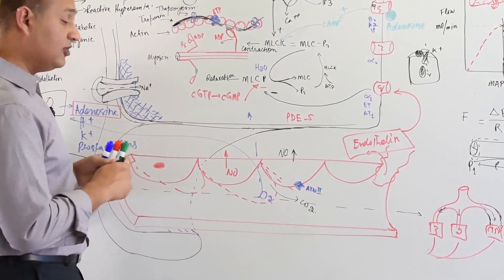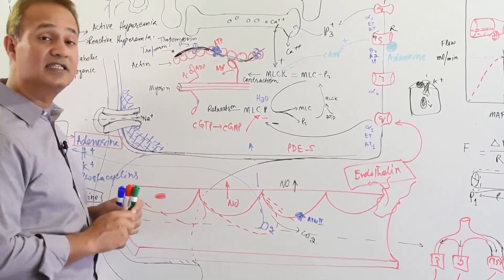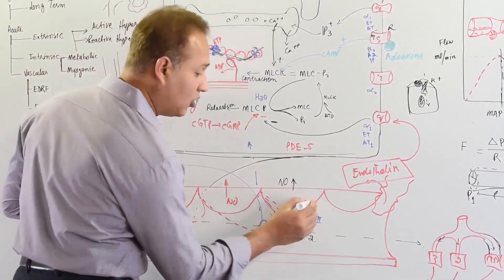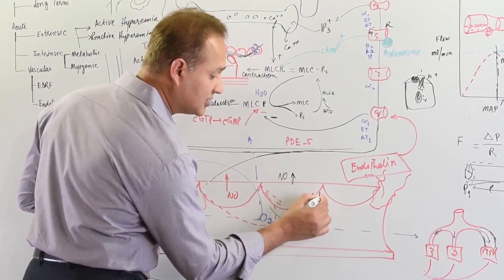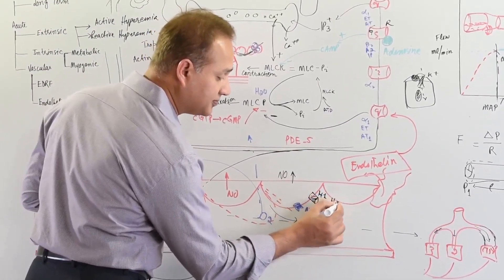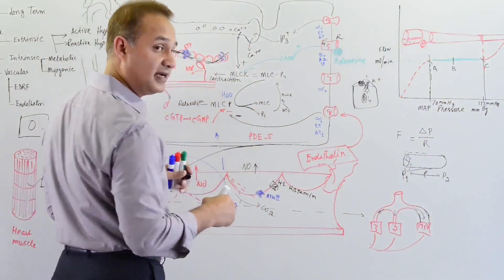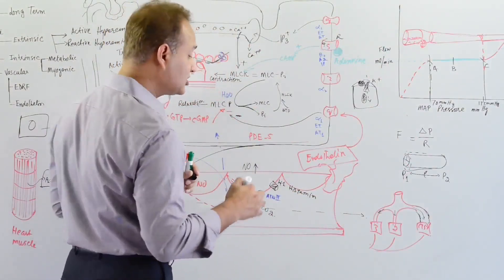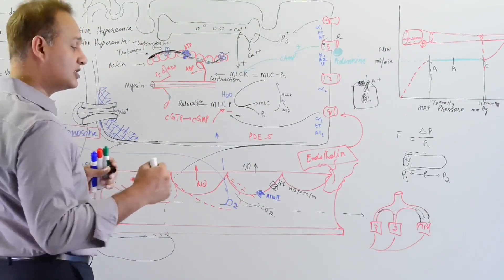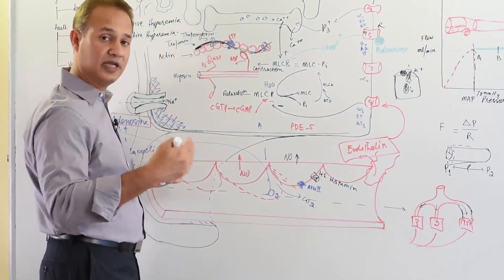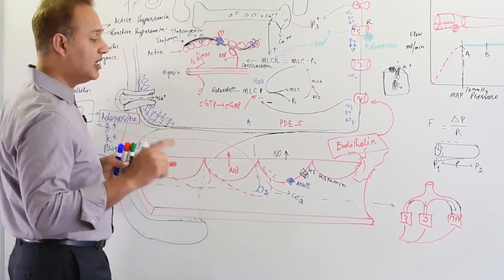Then vasoactive amines also cause nitric oxide to be released. Histamine H1 receptors also cause nitric oxide to be released. Prostacyclin also causes nitric oxide to be released. So nitric oxide is released in response to many factors that are looking to dilate blood vessels.